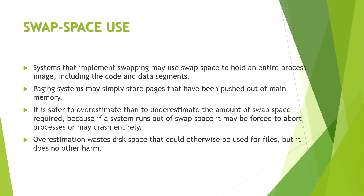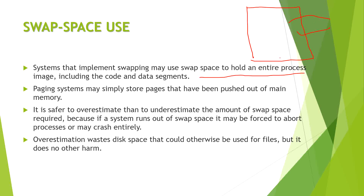Systems that implement swapping may use swap space to hold an entire process image. If the process is very large, we swap the space between disk storage and virtual memory. It is safer to overestimate than underestimate: we take the maximum possible memory from disk for virtual memory management, so that if any memory issue occurs during process execution, the process will not abort.